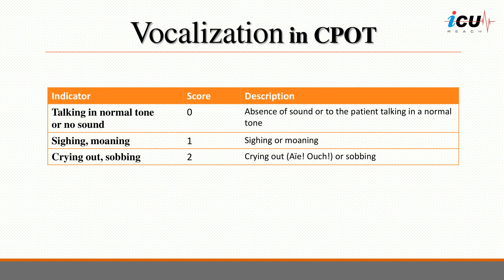Vocalization is used in non-intubated patients who are able to vocalize. A score of 0 refers to the absence of sound or to the patient talking in a normal tone. A score of 1 is given when the patient is sighing or moaning, and a score of 2 when the patient is crying out or sobbing.